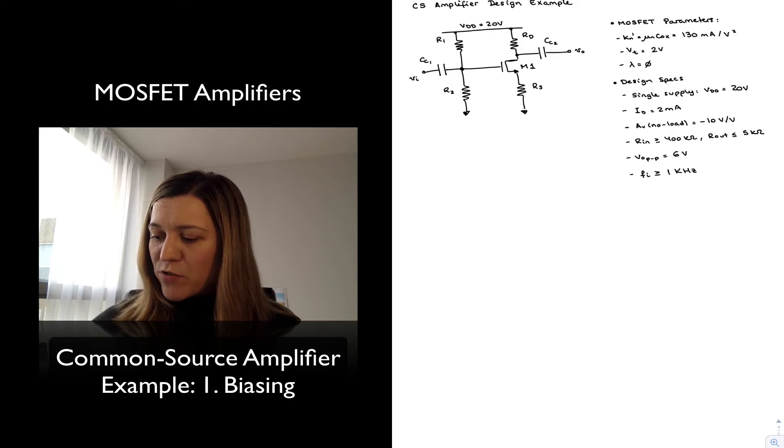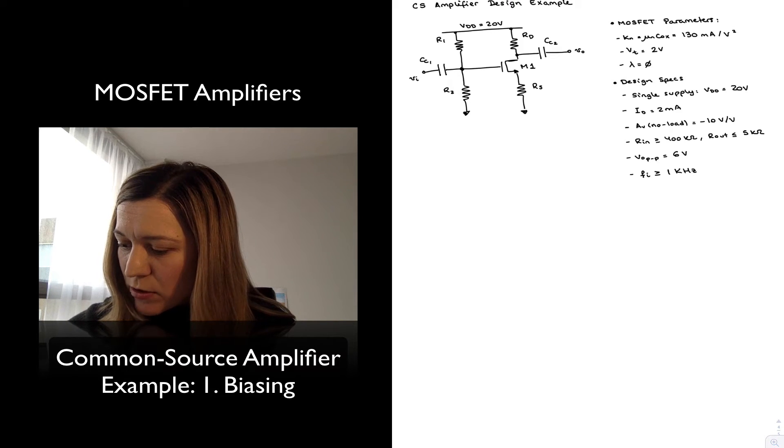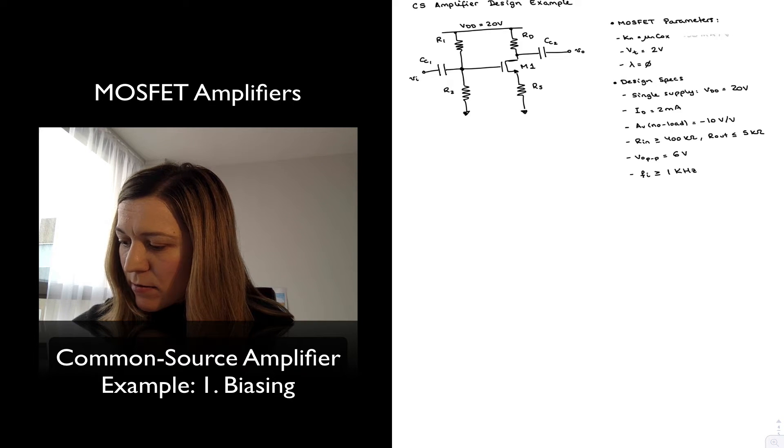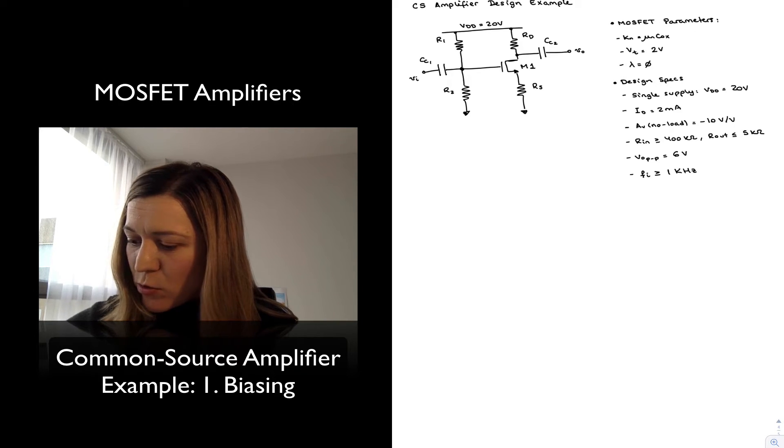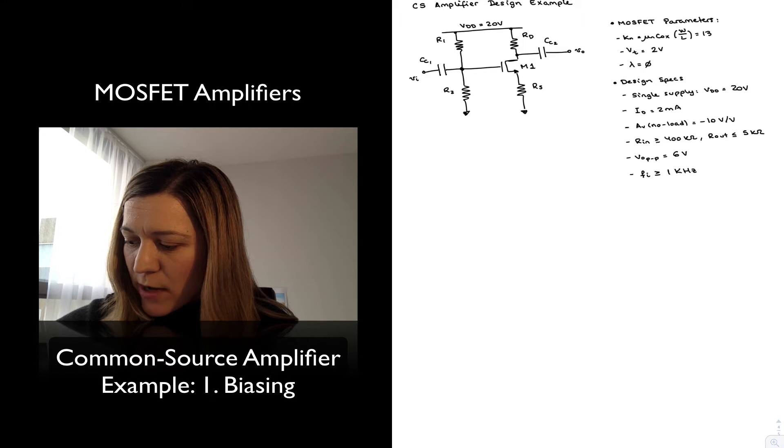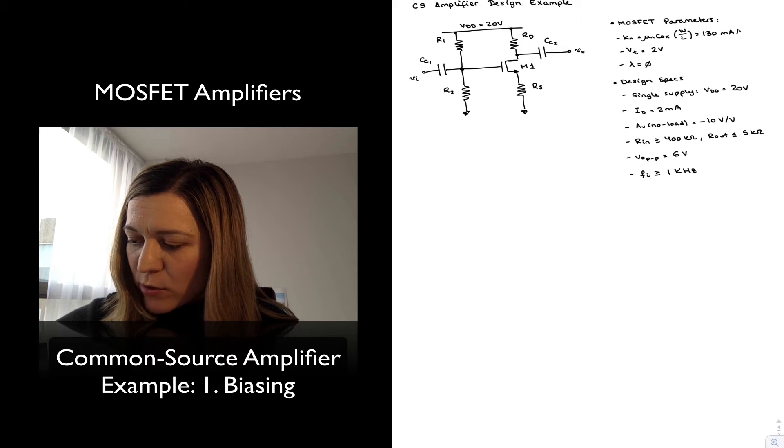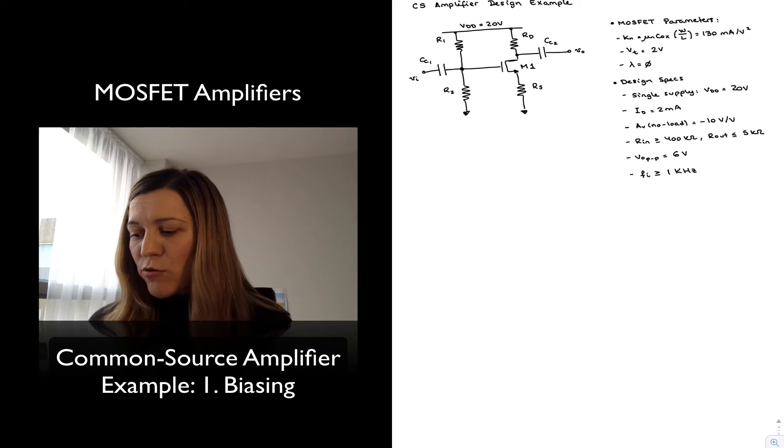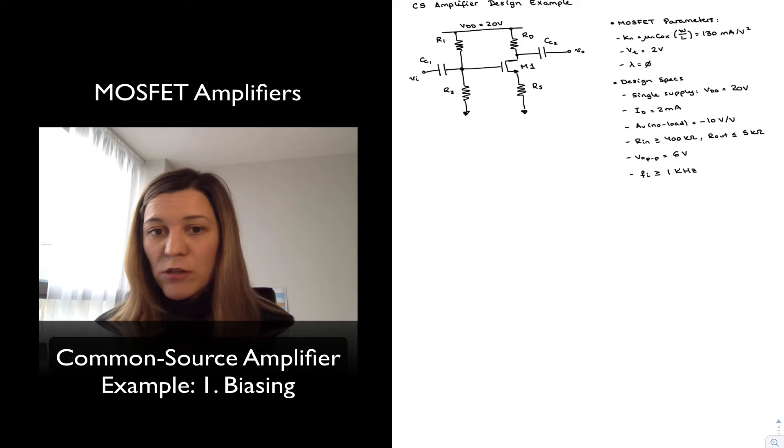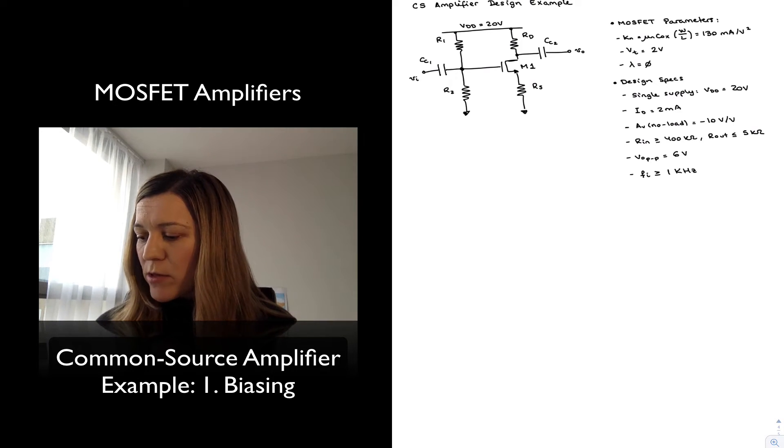I have my MOSFET parameters. We're going to simplify this a little bit by just saying my whole MOSFET parameter Kn, which is μn Cox W/L, is equal to 130 milliamps per volt squared. My threshold voltage is going to be 2 volts. I'm going to ignore channel length modulation effects by assuming my lambda is equal to zero.